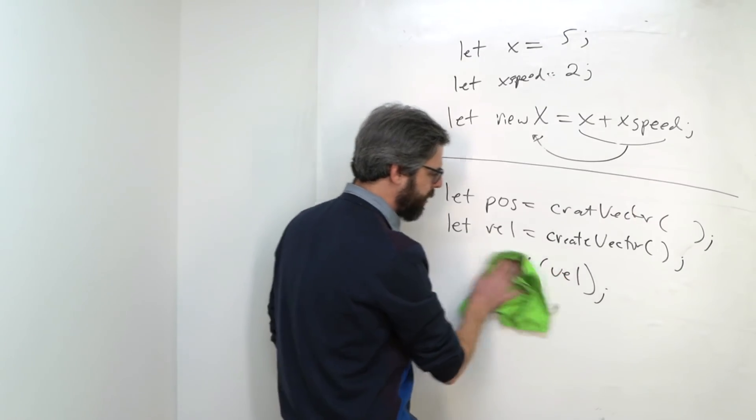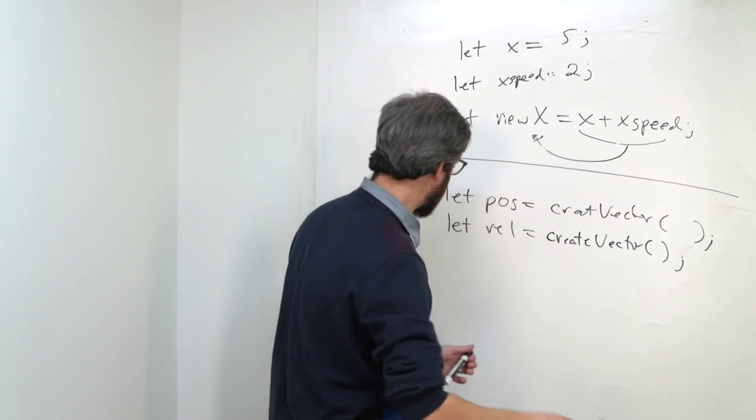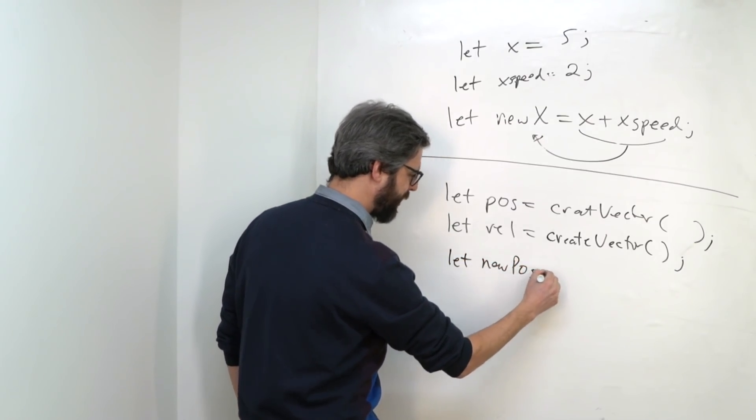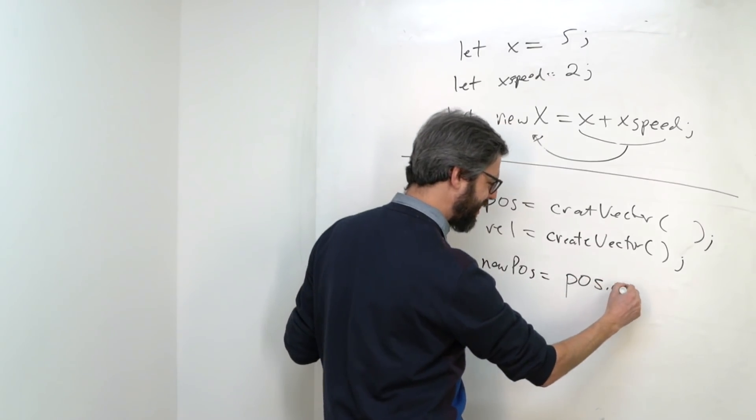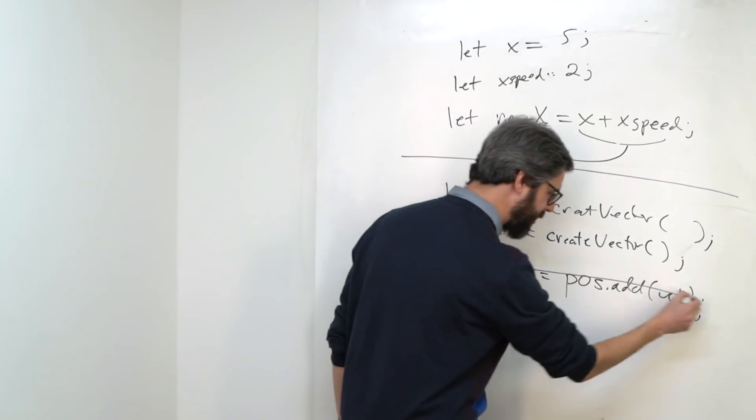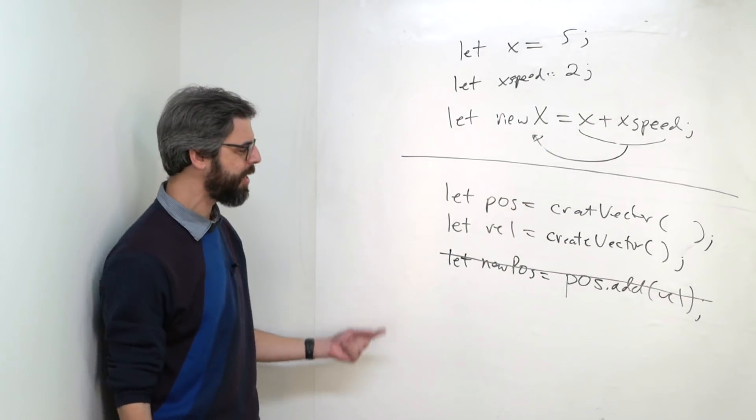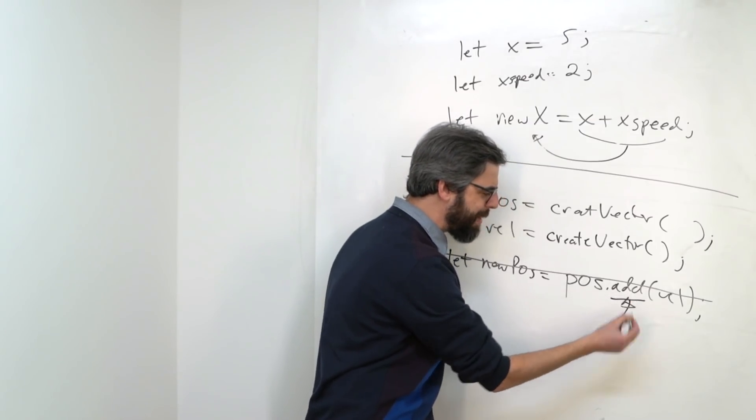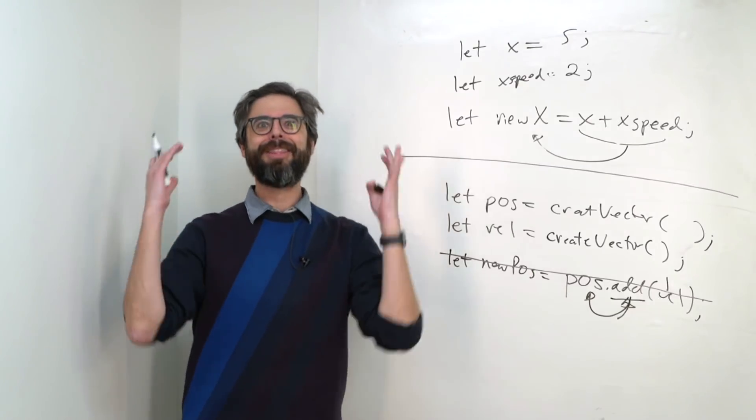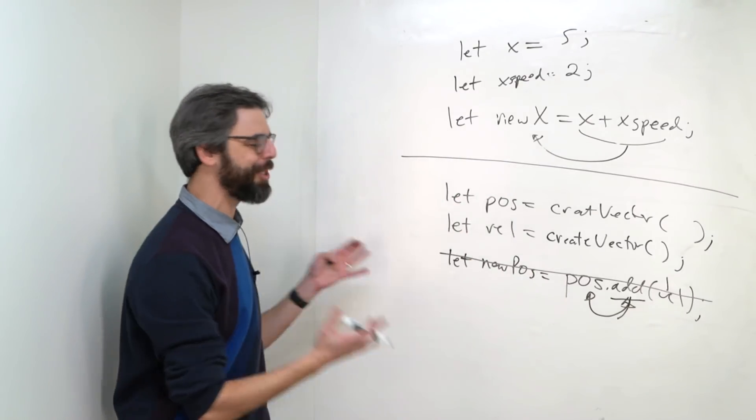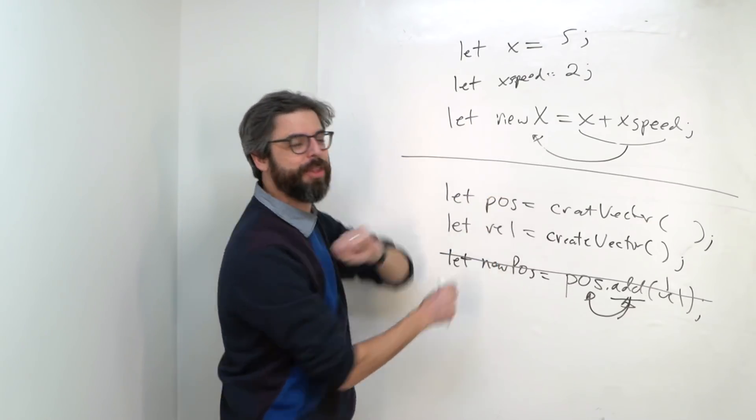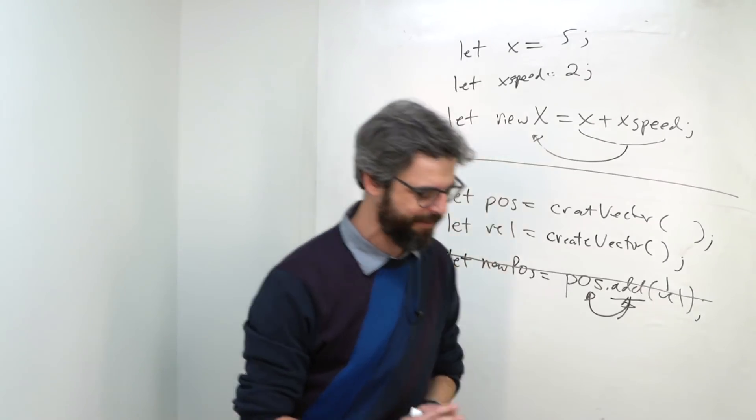How do I do that with vectors? So your instinct might be, OK, maybe I'm going to have a new pos, and I would set that equal to pos add velocity. I mean, this makes some logic. It's not correct. It makes sort of logical sense. But by its nature, an instance method that receives another vector changes the object it's acting upon. This is where the static version of add comes in.